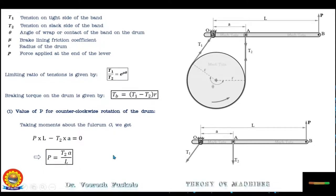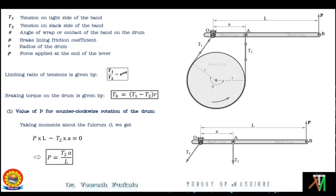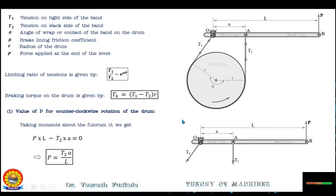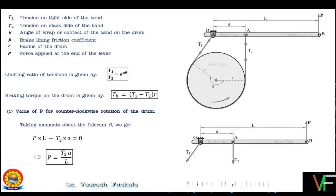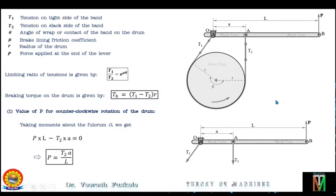So this is how you can find out the value of the applied force for both clockwise and anticlockwise rotation of the drum, and this completes the analysis of the simple band brake. I hope you have understood the concept and will be able to solve numerical problems based on simple band brakes. So now let's take up a numerical problem.